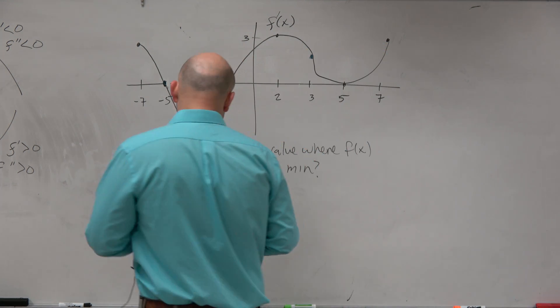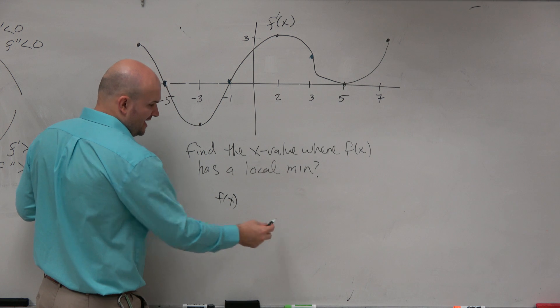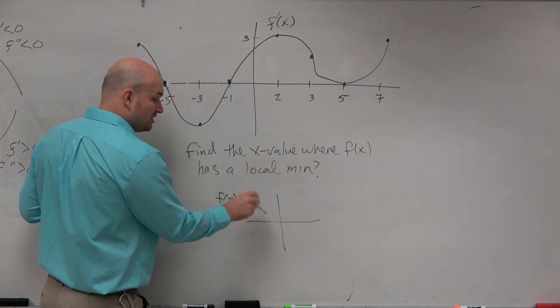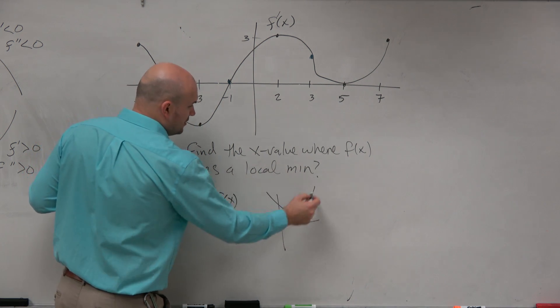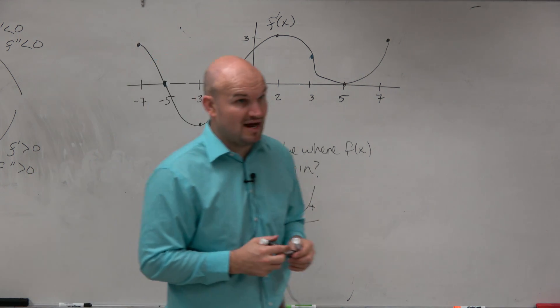And we know that a minimum is going to occur. Let's just pretend we're dealing with f of x here. If we're looking at some function f of x, we know that we're going to have a minimum value when we change from a negative slope to a positive slope.